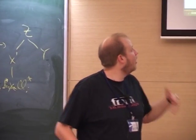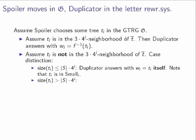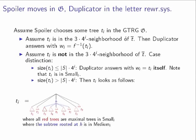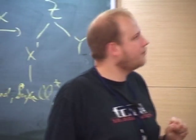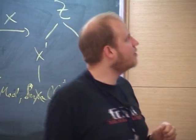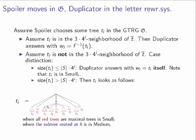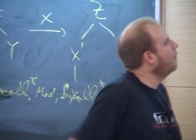What happens if spoiler chooses a tree of bigger size — larger than |S|×4^i? Then there is at least one place in this huge tree that is not small. We call this occurrence of a subtree that violates being small a 'medium' subtree, rooted at symbol H. We additionally select maximally large subtrees that are small. Duplicator then collects all those small subtrees, places the medium tree, and responds by a sequence of trees where all are small except exactly one medium tree.